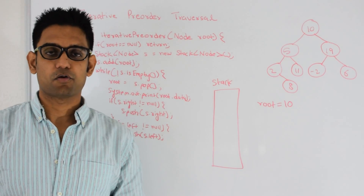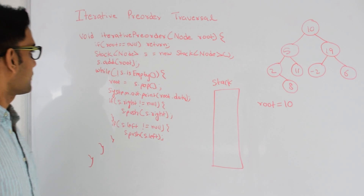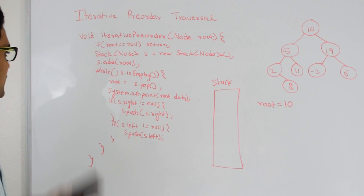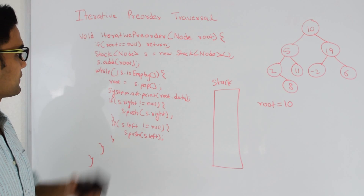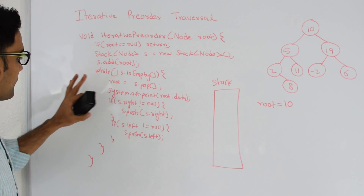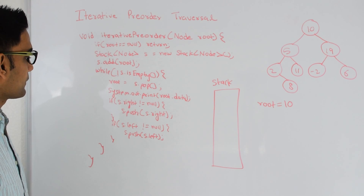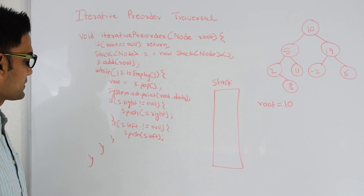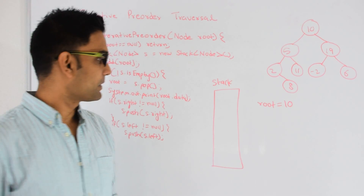Next let's look at the code for iterative pre-order traversal. The name of the function is iterative pre-order. It takes in the root of the binary tree and returns nothing since we are just printing the tree. If the root is null we just return. Otherwise we create a new stack, add the root to the stack, and repeat the process while the stack is not empty. The process is: pop the top of the stack, print the data, if it has a right child push that into the stack, and if it has a left child push that into the stack.